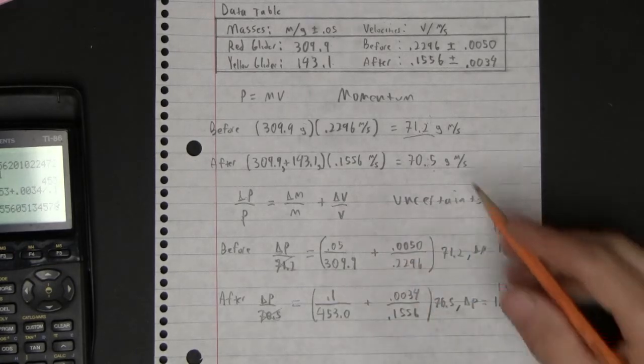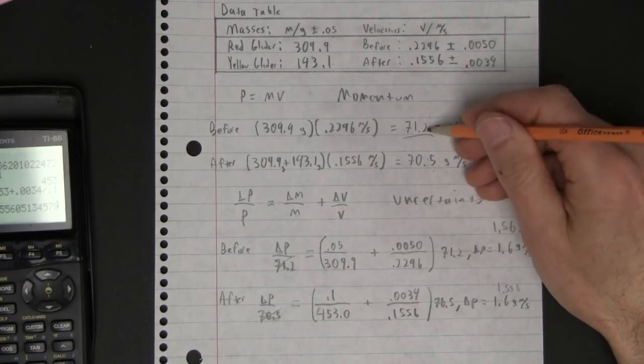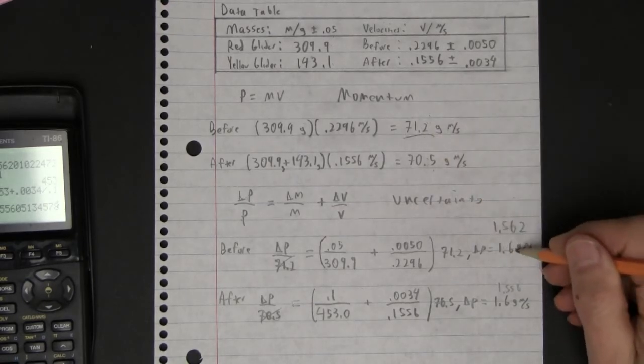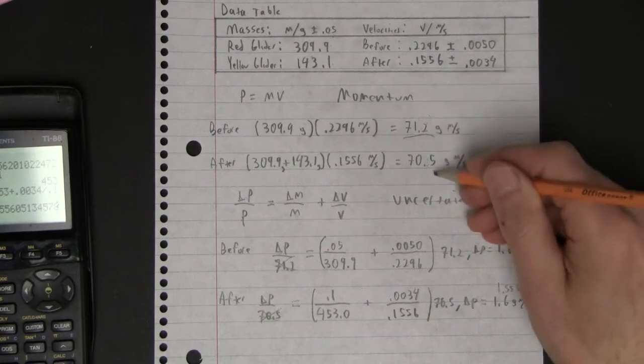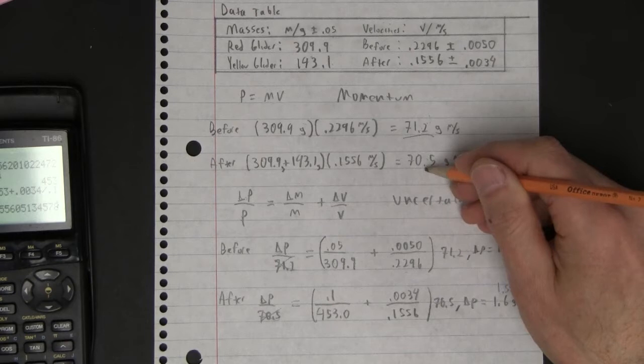But if you look at this, this difference here is actually about, what is that, 0.7, right? Just one of those uncertainties is enough to slop this guy down low enough that it would even cover this thing, this point here, right?